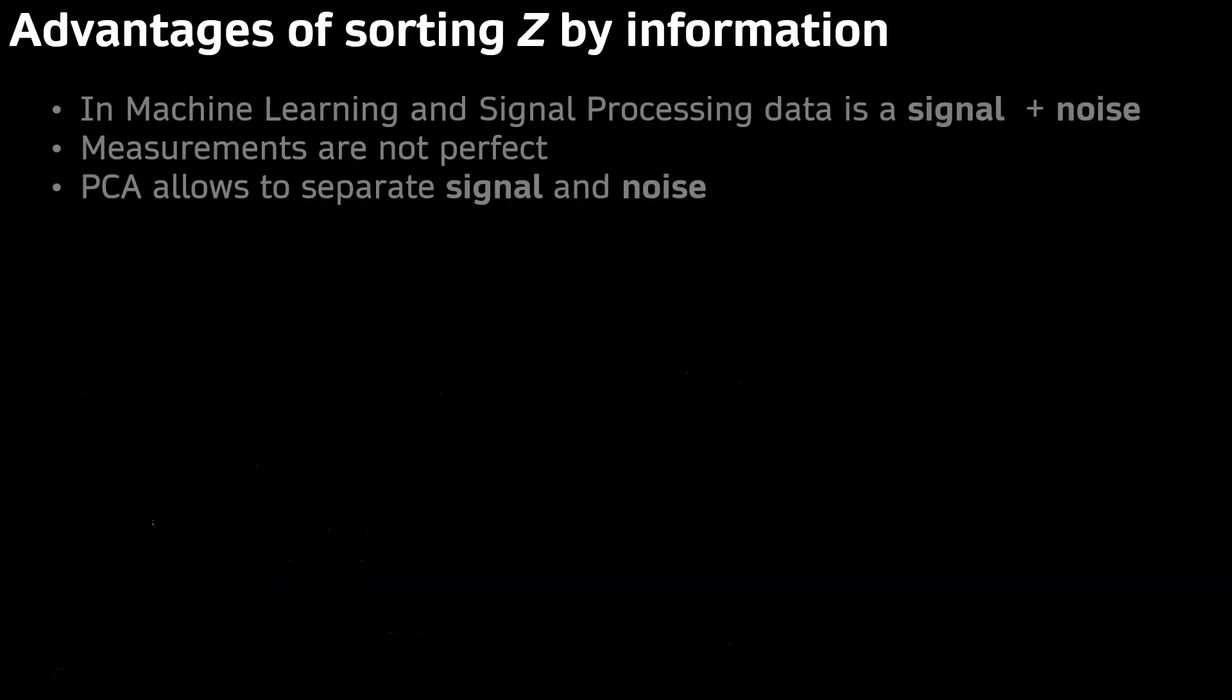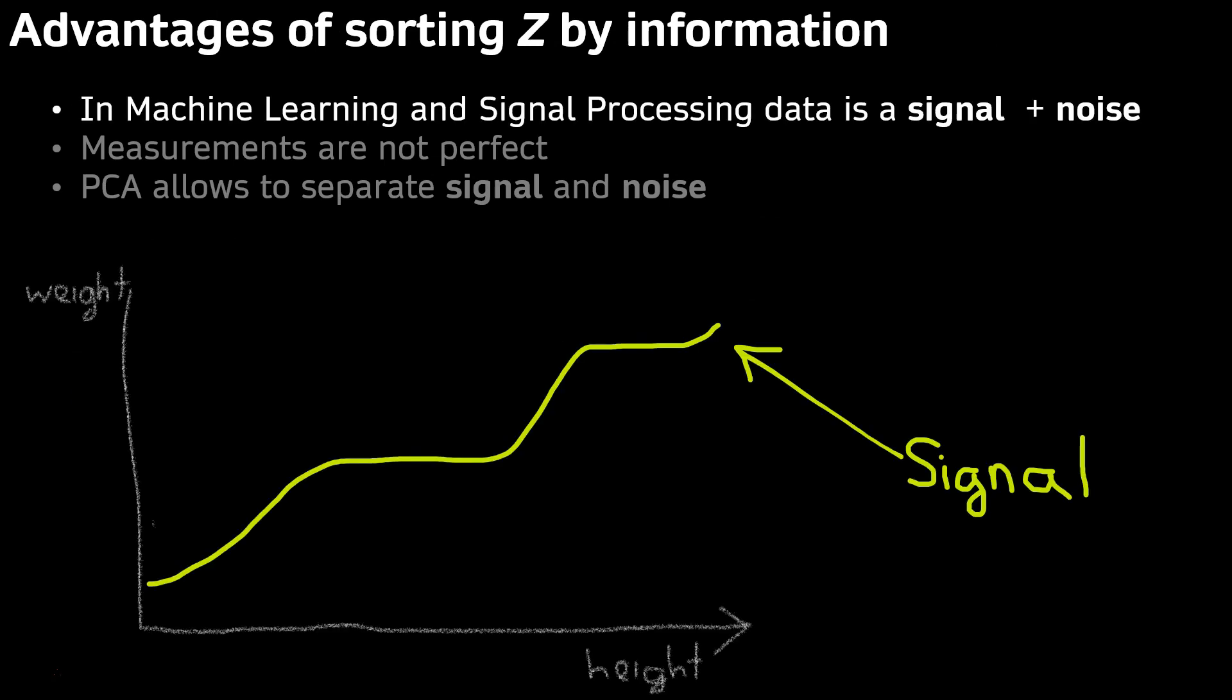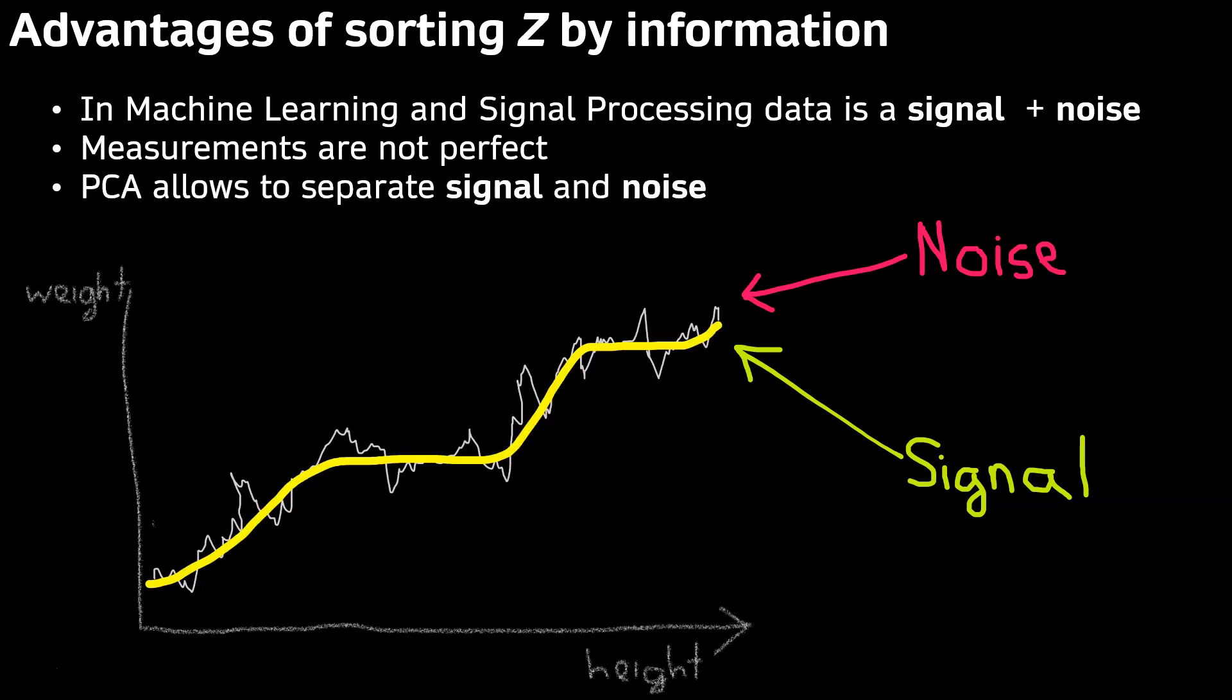What are the advantages of sorting Z by information? In machine learning and signal processing, we can think of our data as signal plus noise. Measurements are not perfect. PCA allows us to separate signal and noise.